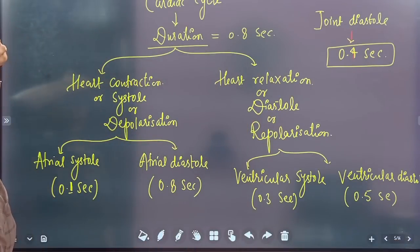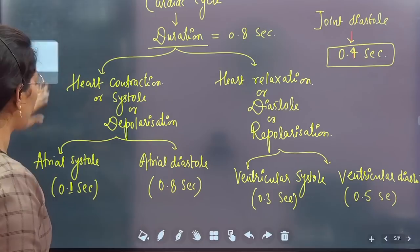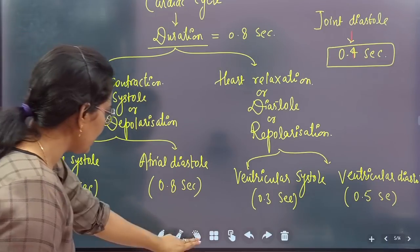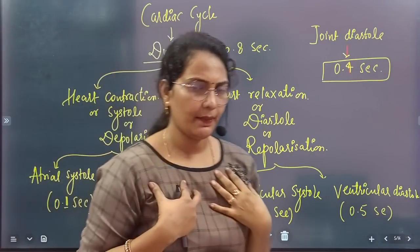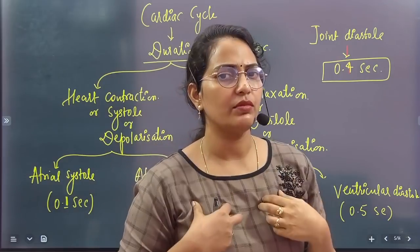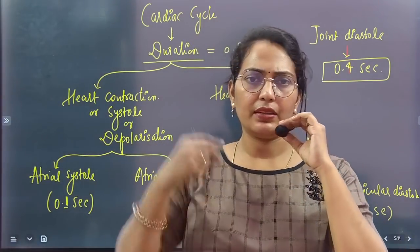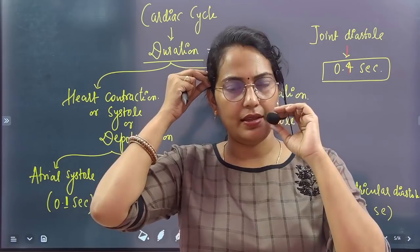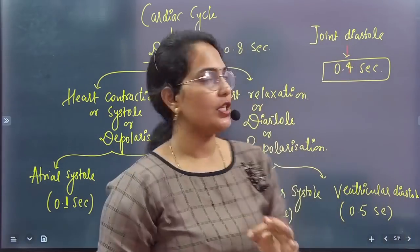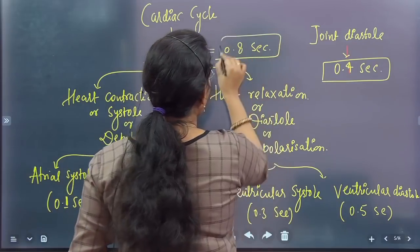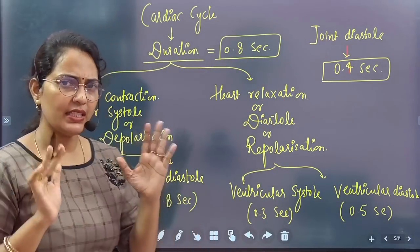The next thing we look at is the cardiac cycle. The cardiac cycle means one complete heartbeat — the time taken for the heart to beat once is called the cardiac cycle. Its duration is 0.8 seconds. In this time, the heart both contracts and relaxes.